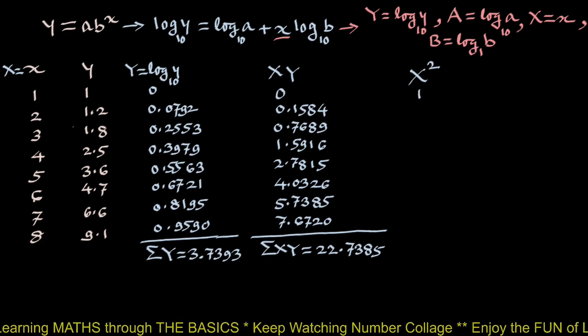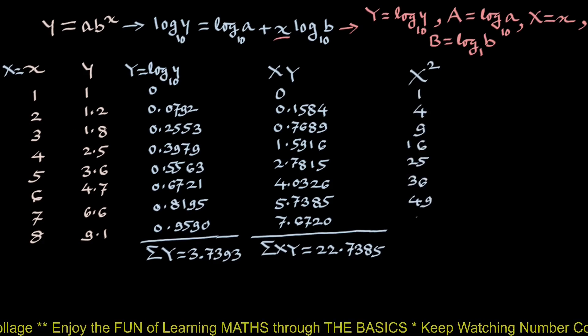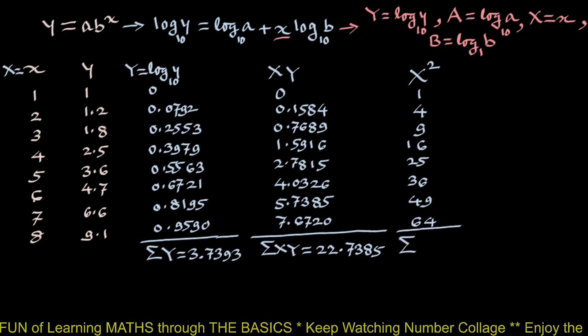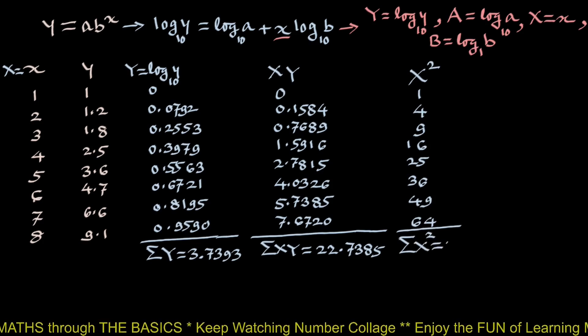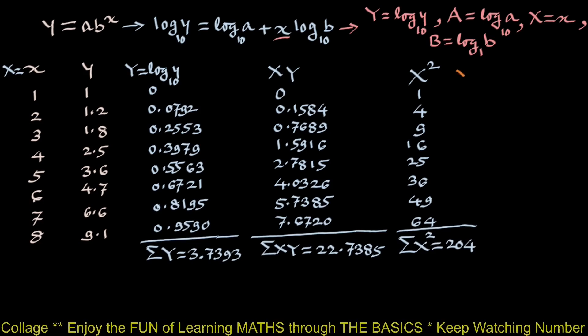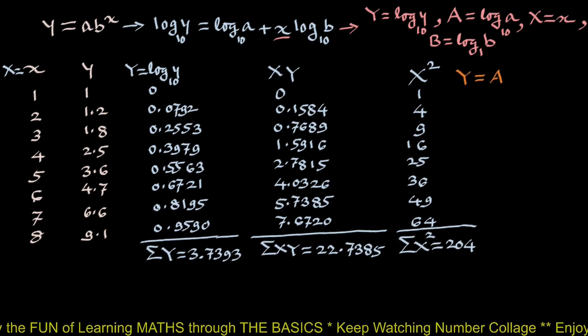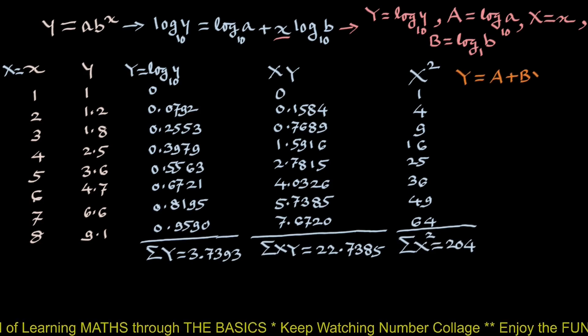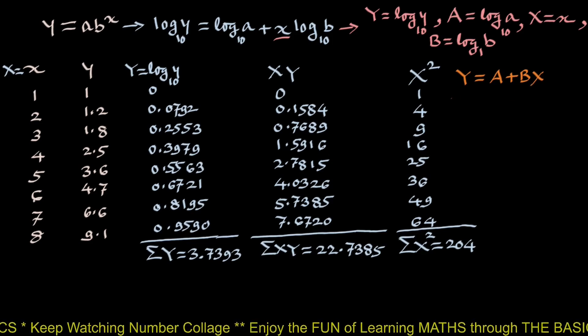And final column X square, so 1 square is 1, 2 square is 4, etc. and 64 and summation X square is 204.